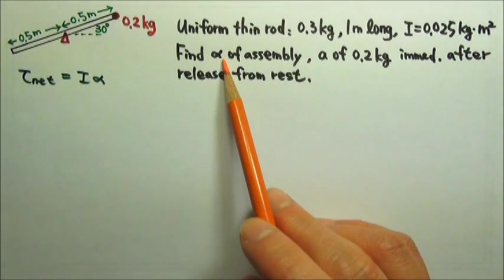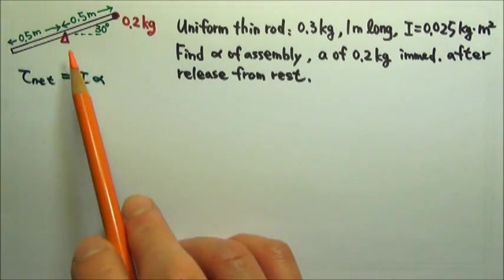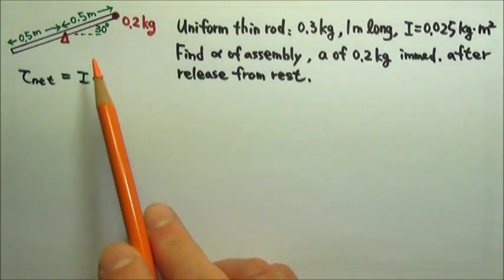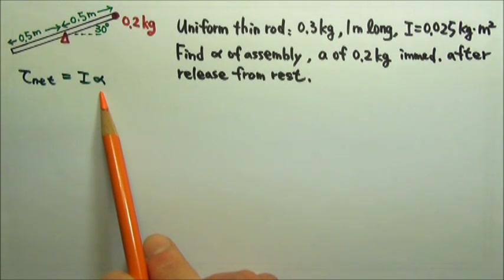To find the angular acceleration and acceleration for this rotating assembly, we can use the rotational counterpart of Newton's second law of motion: net torque equals I·α.